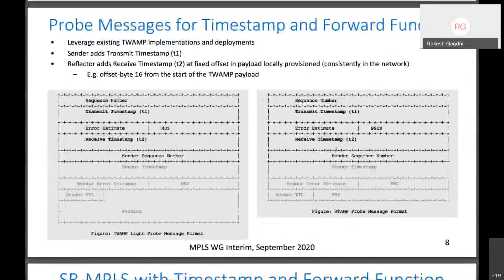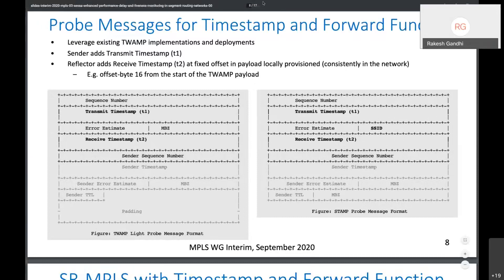Some of the mechanics involved: this shows the TWAMP probe message formats, to leverage the existing wide deployment of TWAMP implementations as well as all the operational tooling around them. There is a timestamp offset at position 16, where the reflector would add the receive timestamp and the courier would add the transmit timestamp. This allows monitoring of end-to-end delay for the SR path.